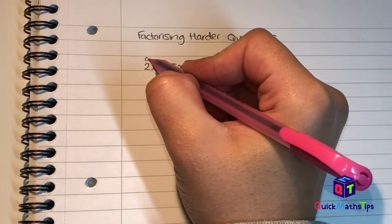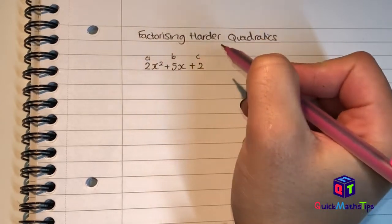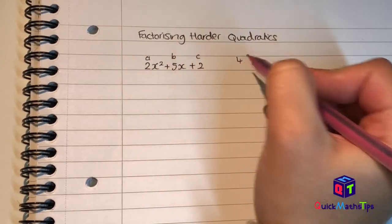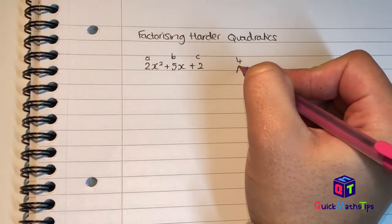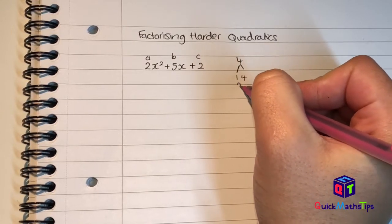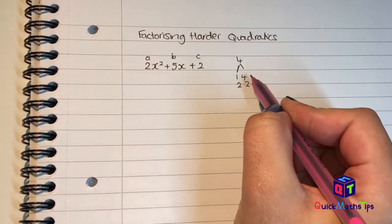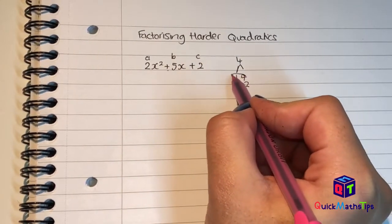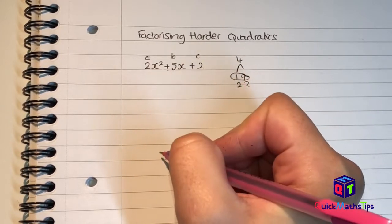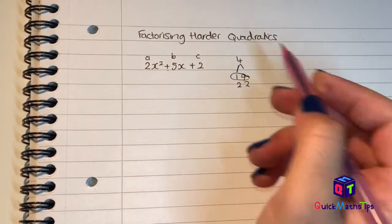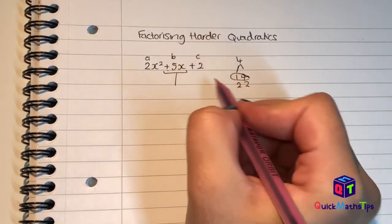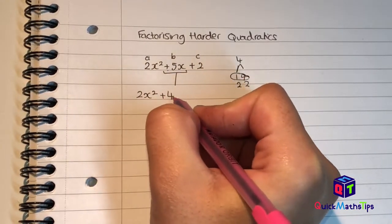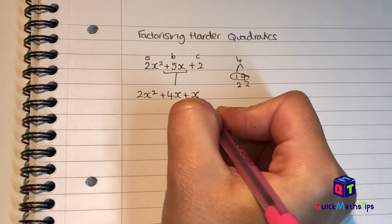This is my a value, this is my b value, this is my c value. I'm going to multiply together my a and my c — in this case 2 multiplied by 2 which gives me 4 — and then I'll find my factors of 4, which is 1 and 4, or 2 and 2. I need to find two factors that add to give me b: positive 4 and positive 1 give me positive 5. I'm not going to put them into brackets straight away; I'm going to split my b value into 4x and x. So I write down 2x² + 4x + x + 2.